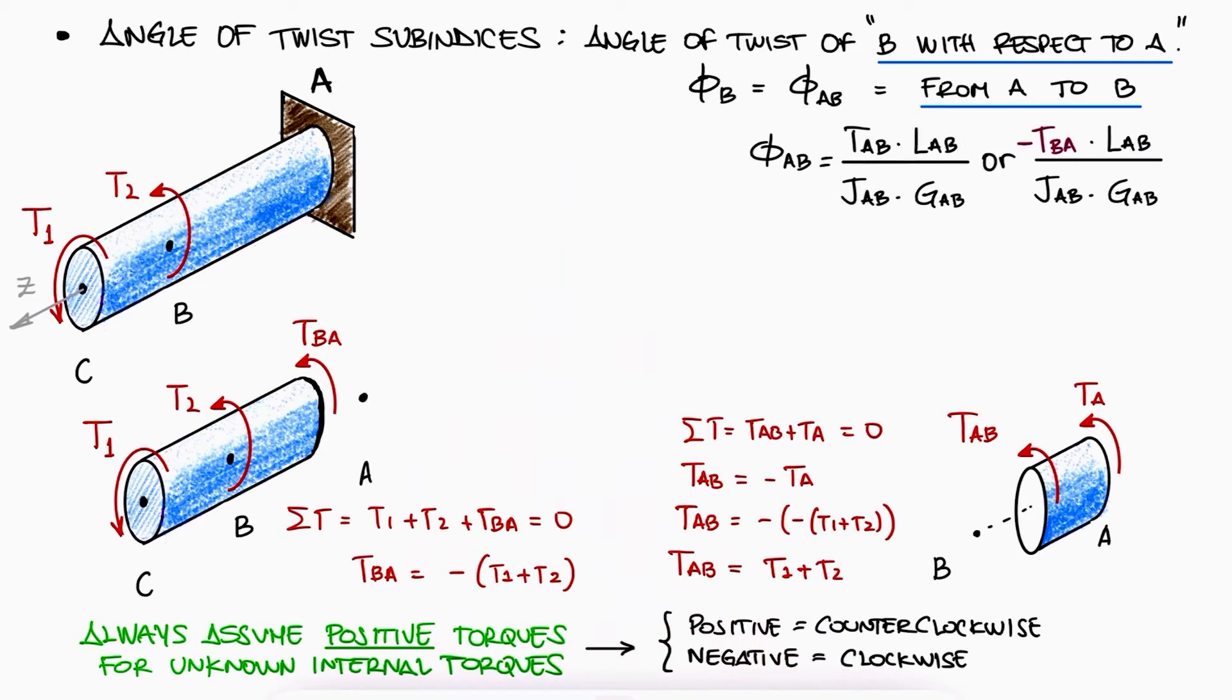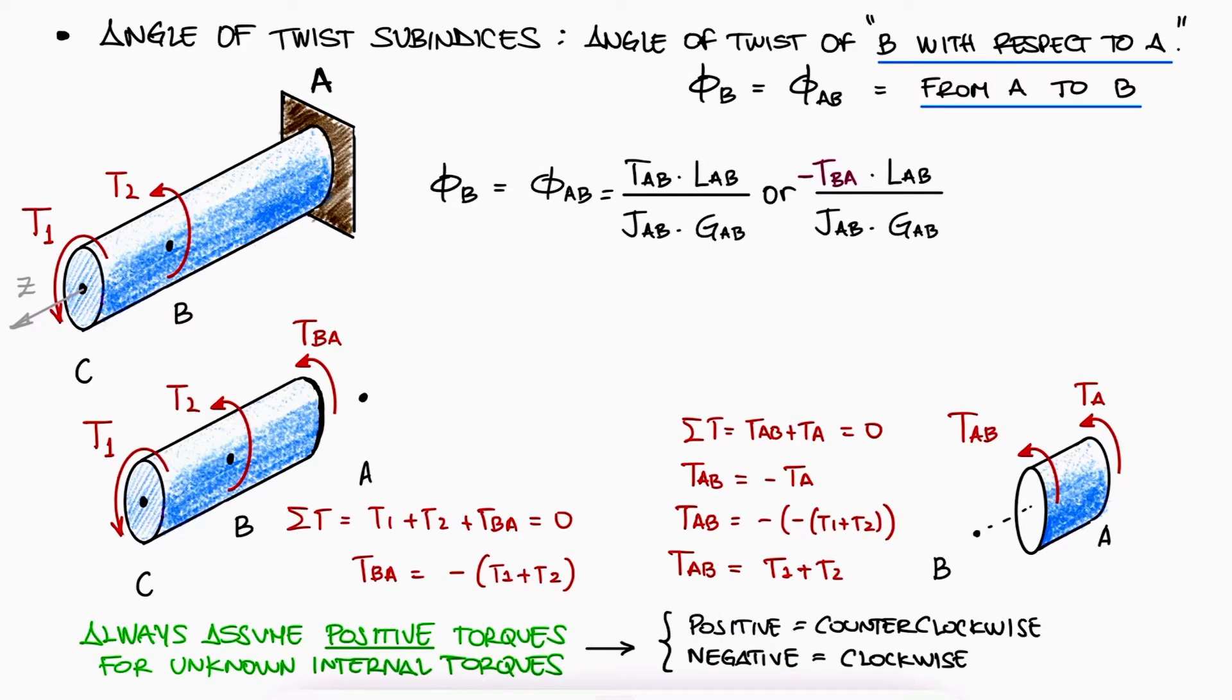So if we want to calculate the angle of twist at B, we really want to calculate the angle of twist of B with respect to something that is not moving, in this case, wall A. We write this as phi AB from A to B or what is the same B with respect to A, and we would use TAB correspondingly.